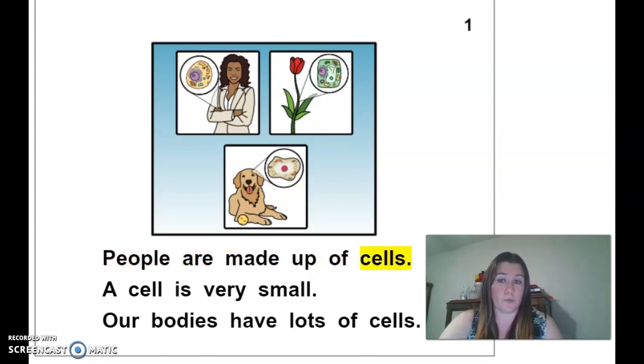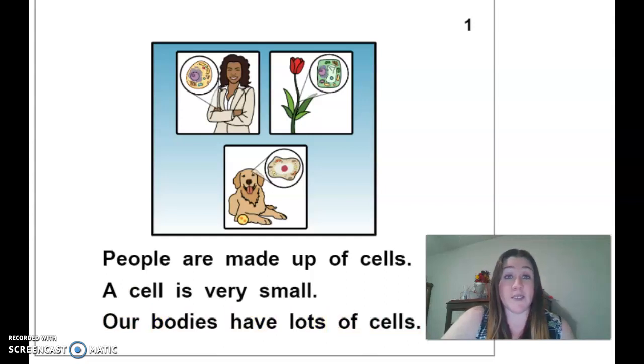People are made up of cells. A cell is very small. Our bodies have lots of cells. Now you can't see cells with the naked eye. You actually have to use a microscope. Everything that is living has a cell and millions of them.